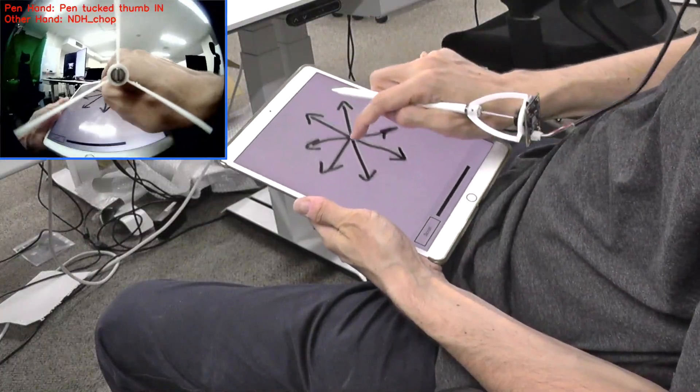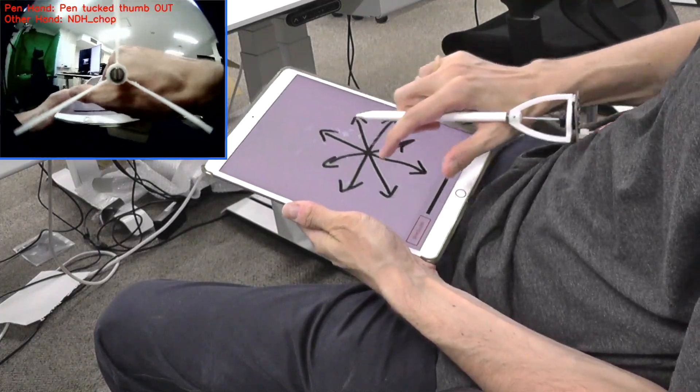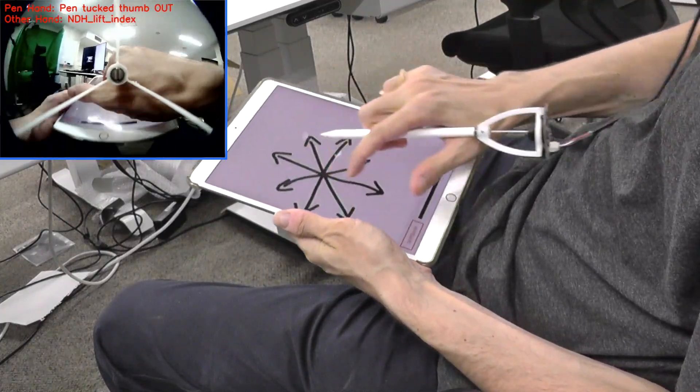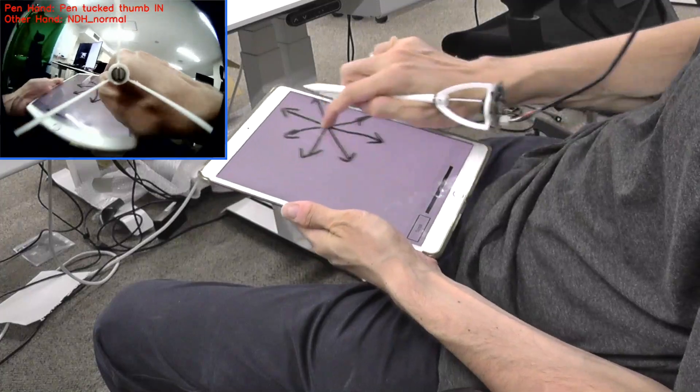Different postures can also modify touch input when tucking the pen between the fingers, for instance extending the thumb to constrain scrolling to axis directions.